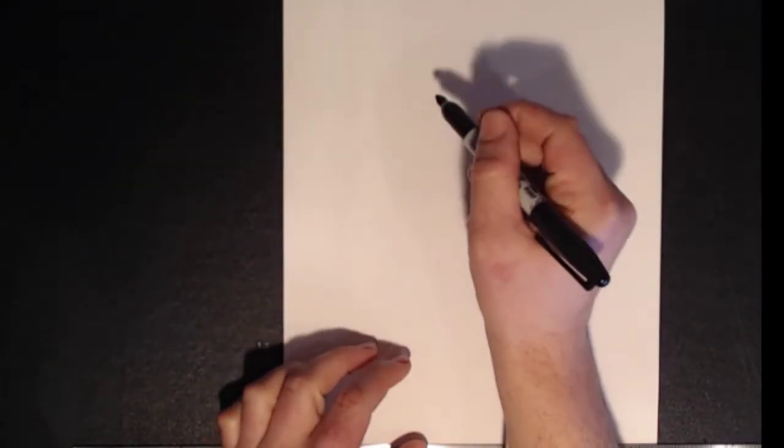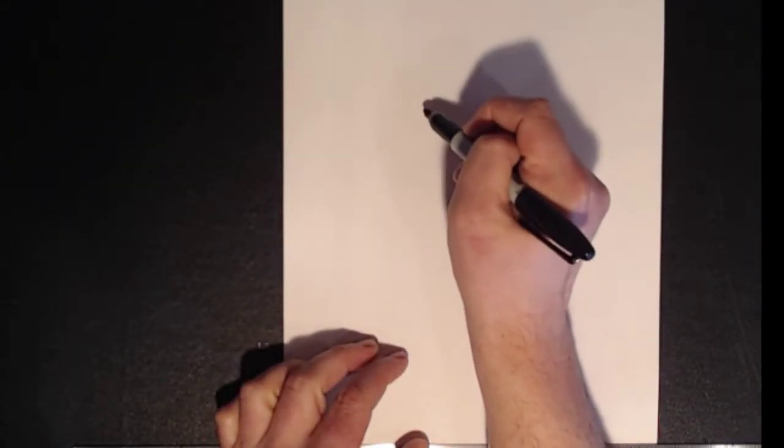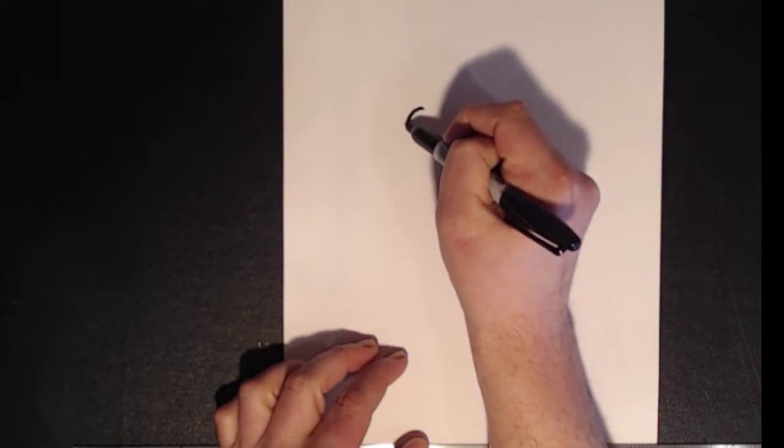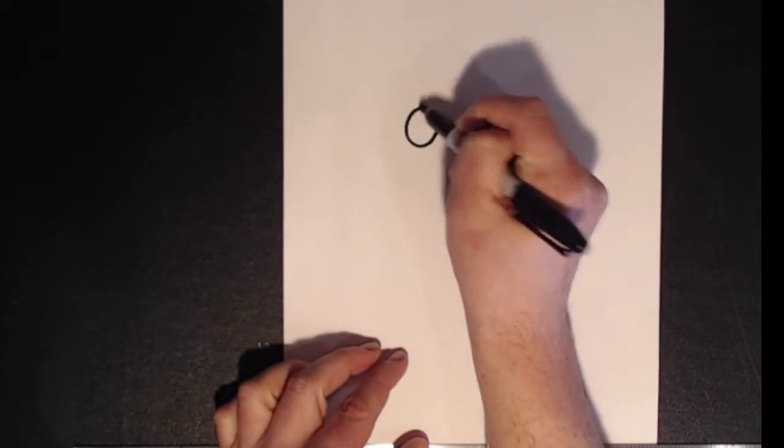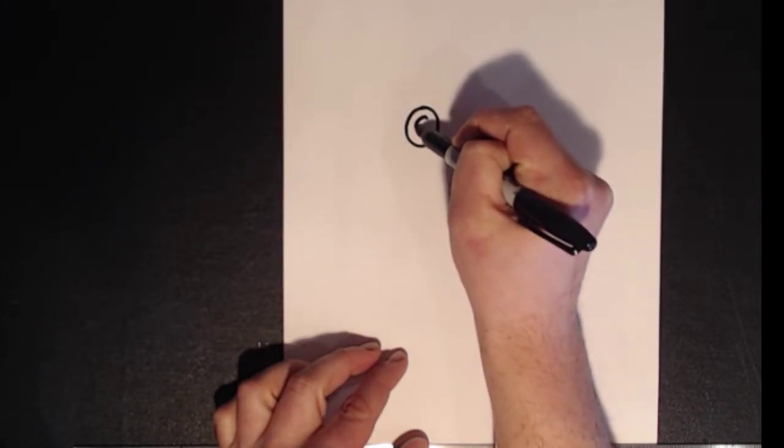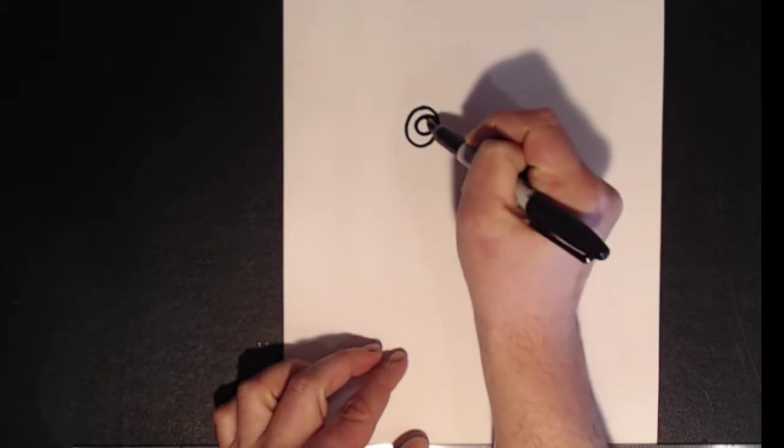We're going to start with two eyeballs. So his eyes are kind of round. A second circle, and then a little bit of white in it.